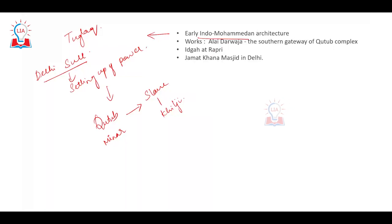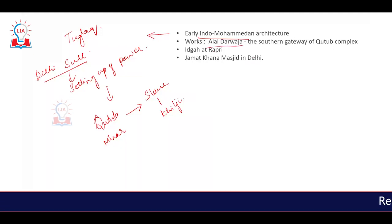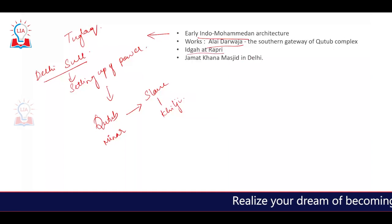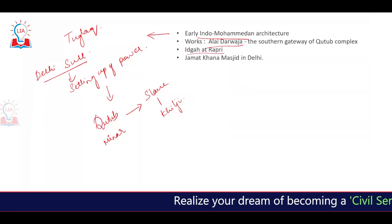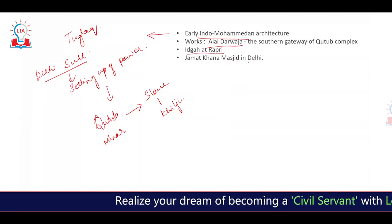A very large and important work with respect to the Kilji dynasty is the Alai Darwaza, which forms the southern gateway of the Qutub complex, and also the Malika-i-Jahan's tomb and the Jamat Khana Masjid in Delhi.